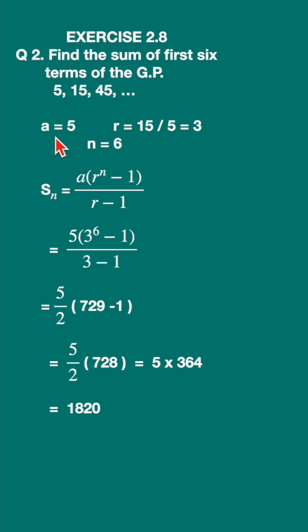Here is the GP. The first term a is equal to 5. The common ratio r is the second term divided by the first term, that is 15 upon 5, which is equal to 3.